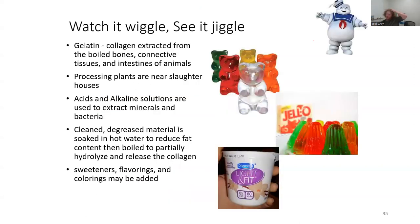Other fibrous proteins: gelatin is collagen extracted from the boiled bones, connective tissues, and intestines of animals. Processing plants are generally near slaughterhouses. Acids and alkaline solutions are used to extract minerals and bacteria, and the cleaned degreased materials are soaked in hot water to reduce fat content, then boiled to partially hydrolyze and release the collagen. Sweeteners, flavorings, and colorings are added — and then you've got gummy bears. You've got Jell-O.